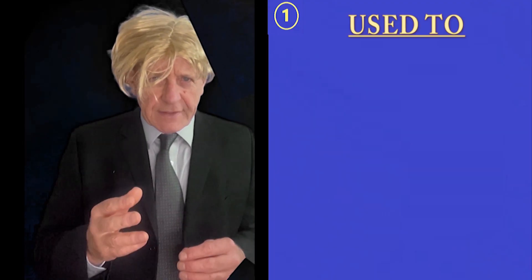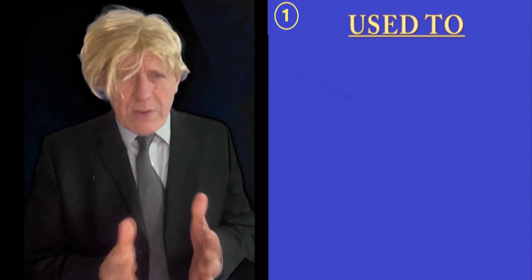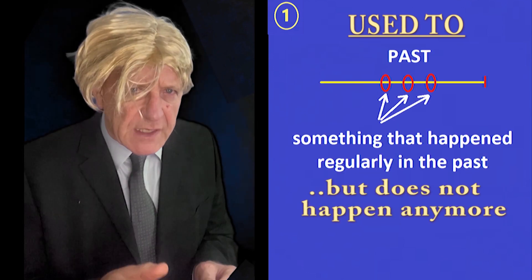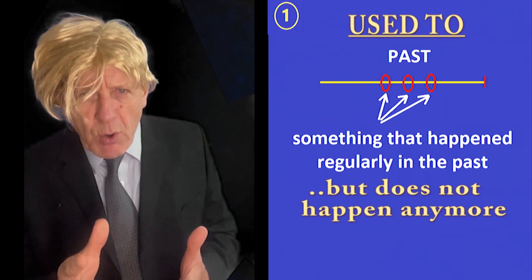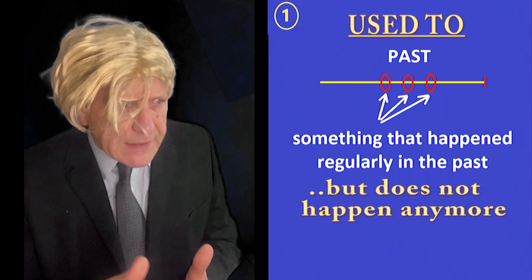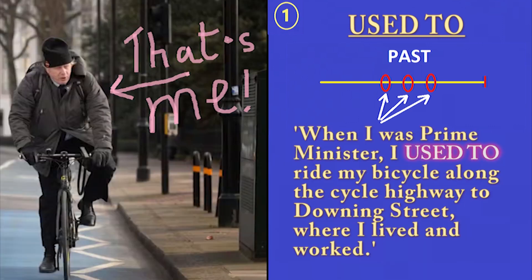What we are looking at today is 'used to.' When we want to talk about something that happened regularly but doesn't happen anymore, or something that was true in the past but now is not true. For example, when I was Prime Minister, I used to ride my bicycle along a cycle highway to Downing Street, where I lived and worked.